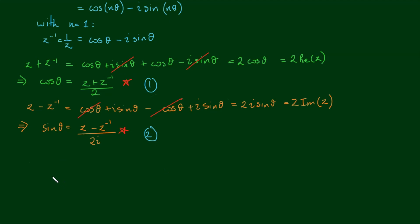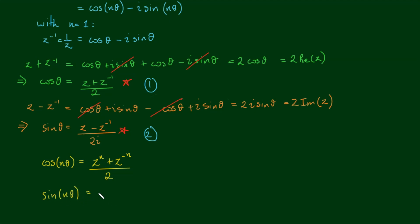Now if I extend equations 1 and 2 to z to the power of n — and you can confirm this for yourself — I'll have the relationship: cosine of n theta equals z to the power of n plus z to the power of negative n, all over 2. And similarly, sine of n theta equals z to the power of n minus z to the negative n, all over 2i. Let's label these as equations 3 and 4 respectively.